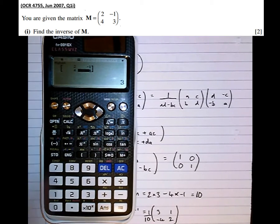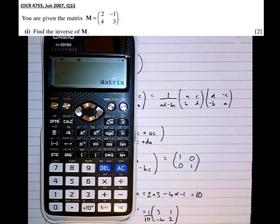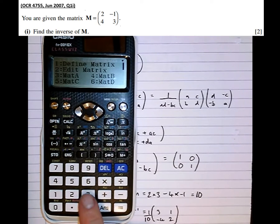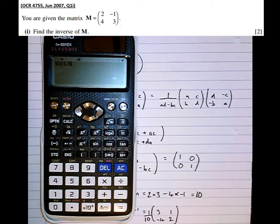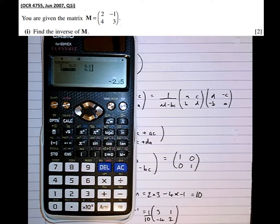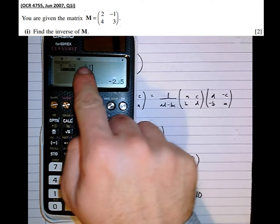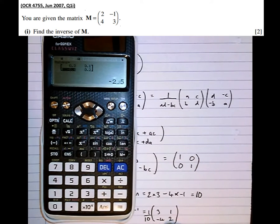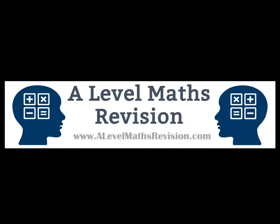Press the operation button and select matrix calculation, option 3. Select matrix A, which is option 3, and press X to the minus 1 to find the inverse. Matrix A to the minus 1 gives: 0.3 top-left, 0.1 top-right, minus 0.4 bottom-left, and 0.2 bottom-right. That confirms our answer. For more tutorials like this, subscribe to our YouTube channel or go to A-LevelMathsRevision.com.